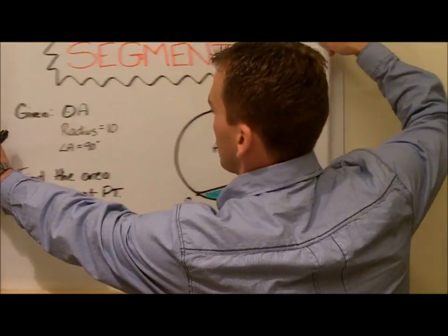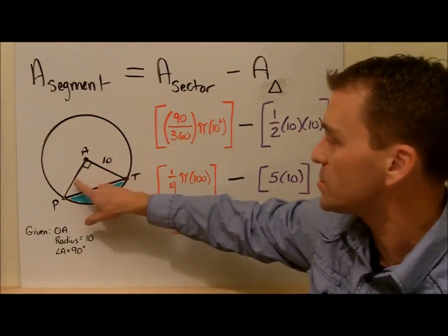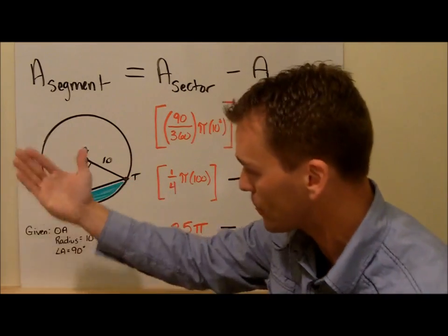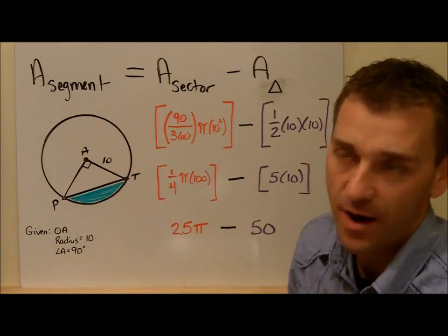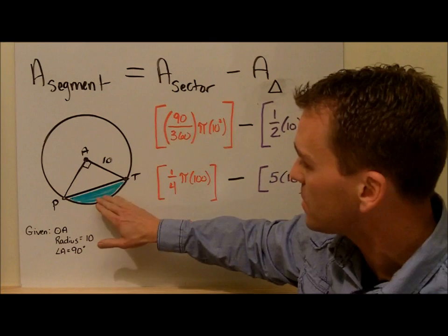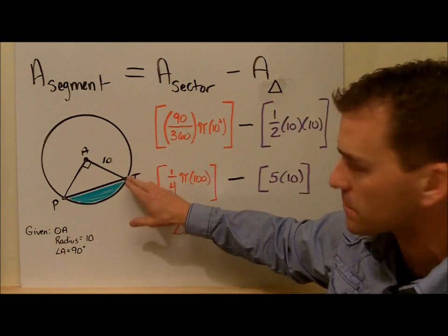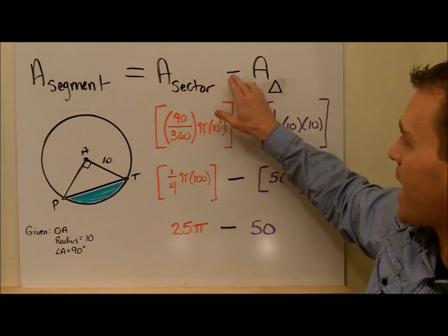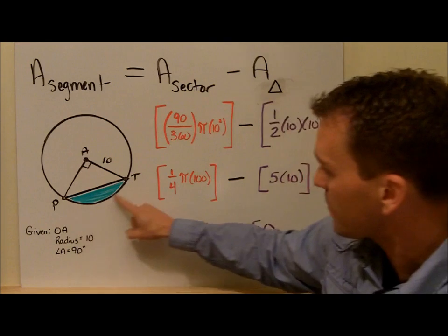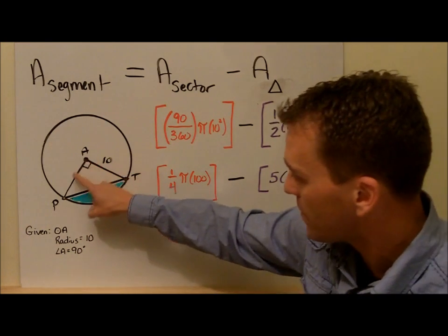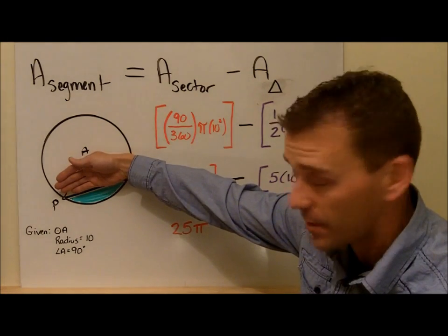You have to draw these two radii. When you draw these two radii, that angle right there is 90 degrees. Here's the concept: to find the area of the segment, you find the area of the sector — that's the whole piece of the pizza — and then you subtract away the area of the triangle. So you find the area of that big piece of pizza, take away the area of triangle PAT, and notice what you have left is just the area of that little green segment right there.